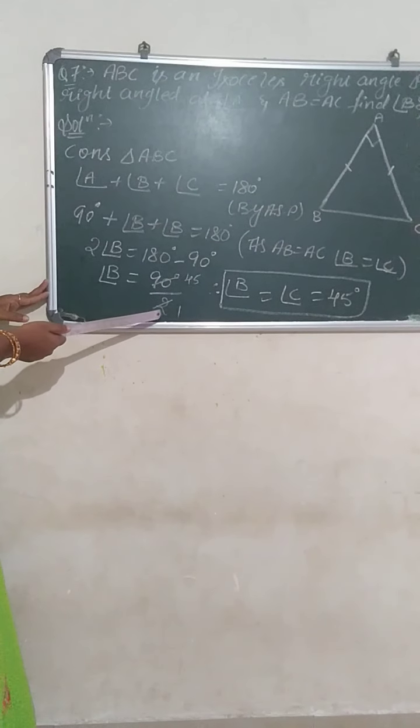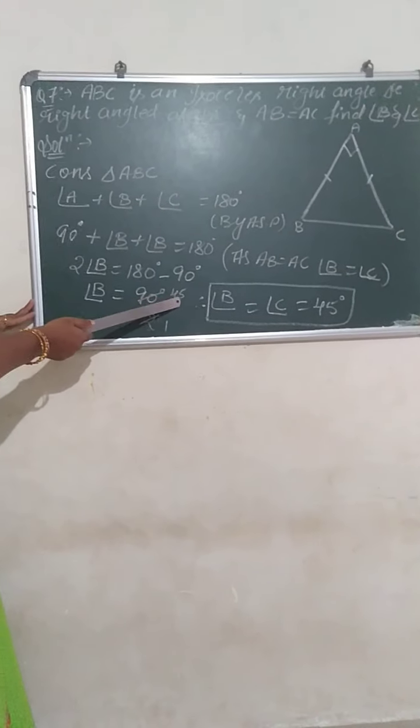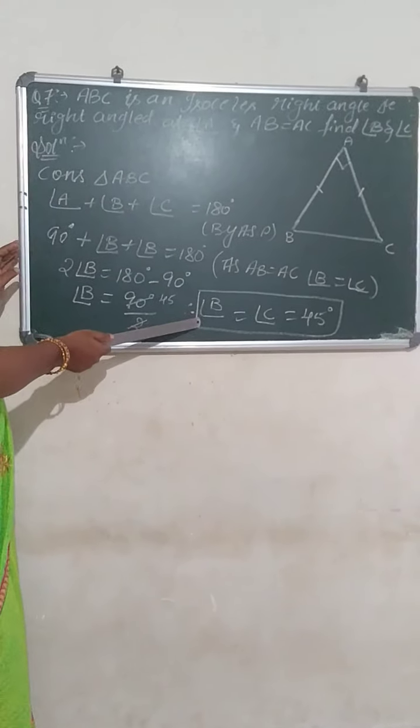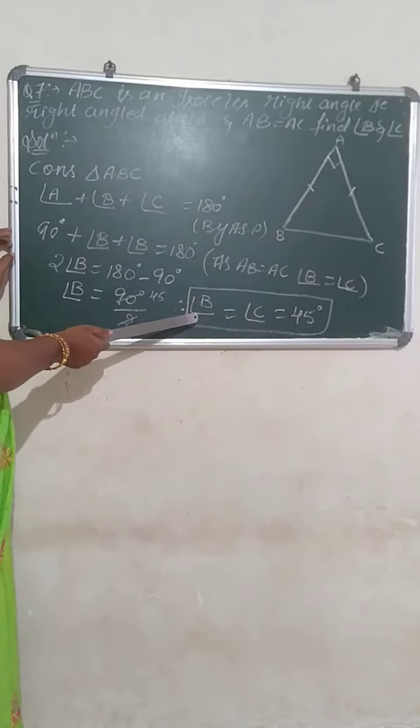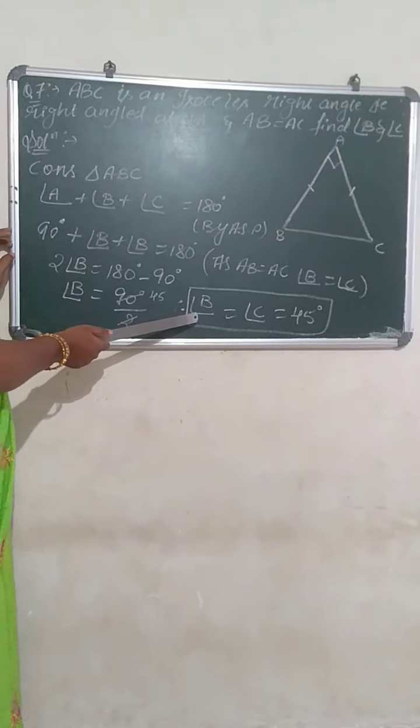Two angle B, so I have written as two times angle B. Two when it jumps to the other side will come to the denominator. When two gets cancelled I will get 45 degrees. Hence angle B is 45 degrees. When angle B is 45 degrees, angle C is also 45 degrees.